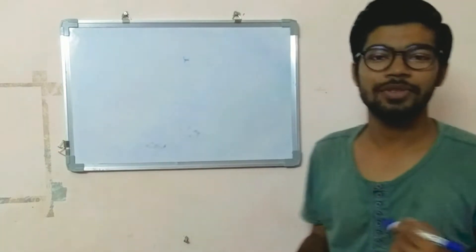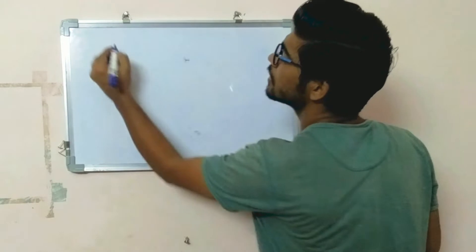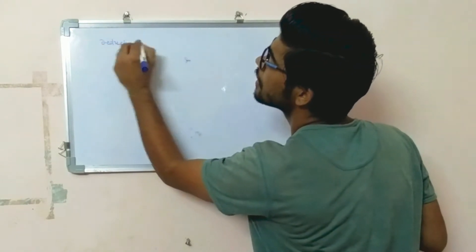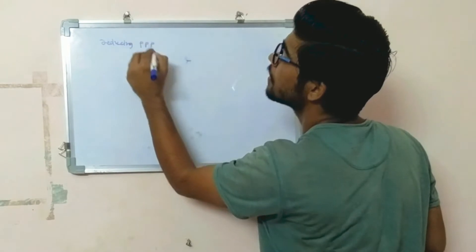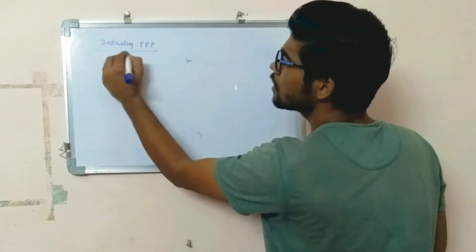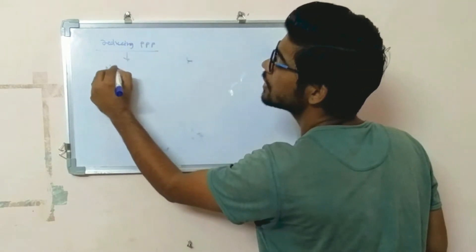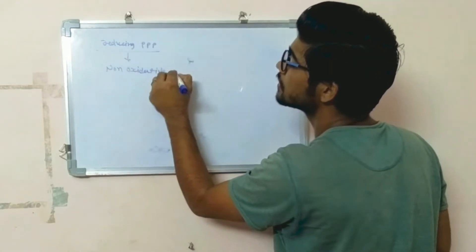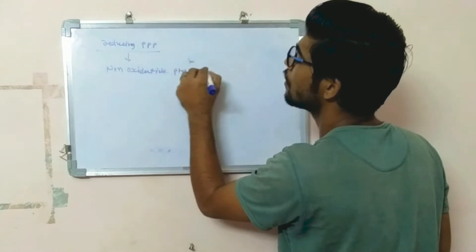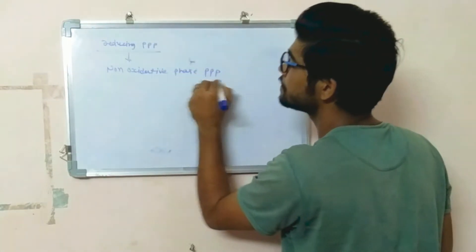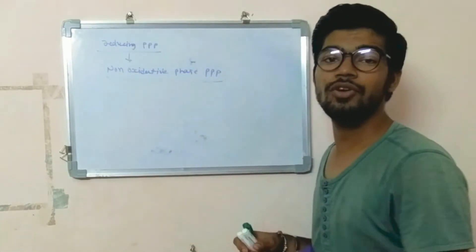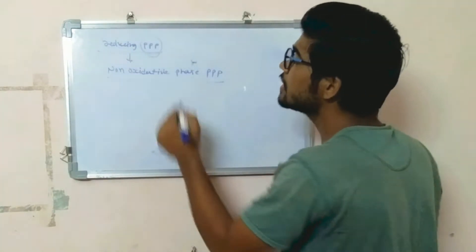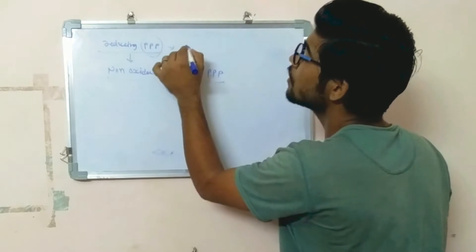Hello guys, in today's lecture we are going to talk about the reducing pentose phosphate pathway or the non-oxidative phase of PPP. In the last lecture we talked about the pentose phosphate pathway in which pentose sugar is formed by using six-carbon sugar.